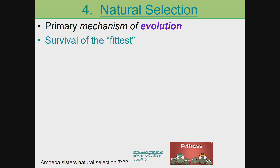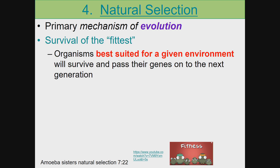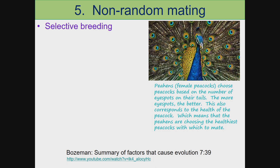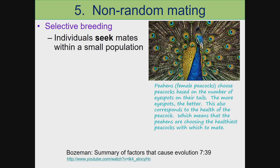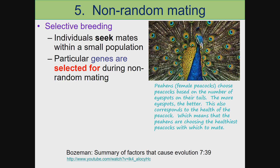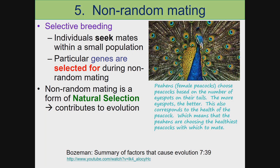Natural selection is the primary mechanism of evolution, also called survival of the fittest. Organisms best suited for a given environment will survive and pass on their genes to the next generation. Non-random mating is a type of selective breeding where individuals seek mates within a small population, meaning particular genes are selected for. For example, peahens choose peacocks based on the number of eye spots on their tails — the more eye spots, the better — which corresponds to the health of the peacock. Non-random mating is a form of natural selection and contributes to evolution.